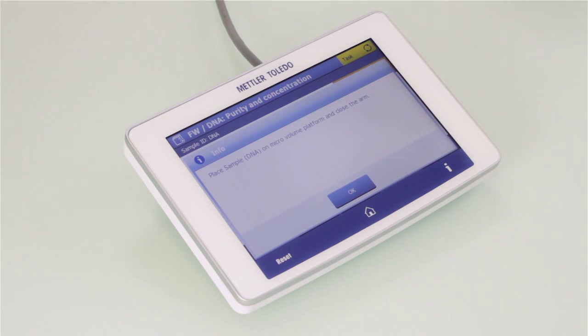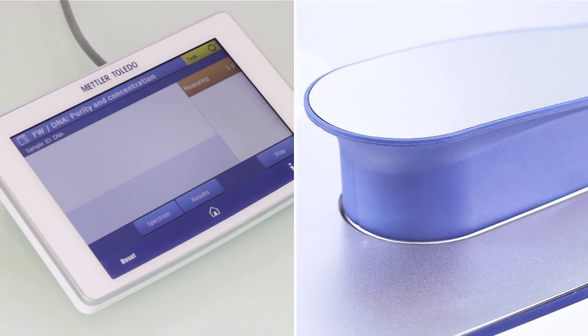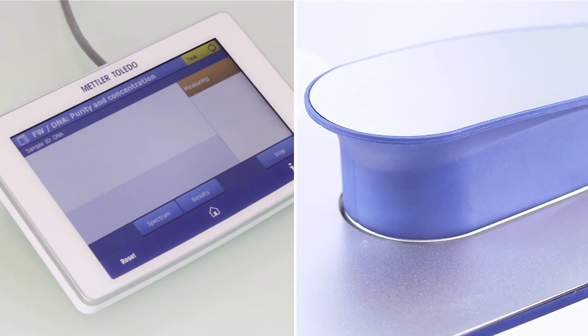The instrument prompts the user to add the sample as well. Once the prompt on the touch screen has been confirmed, the arm is locked to the 1 millimeter pathlink and the measurement is started.